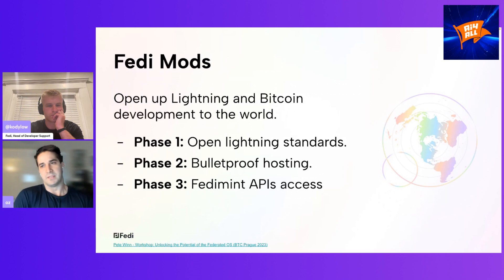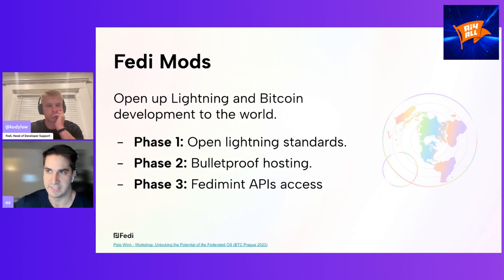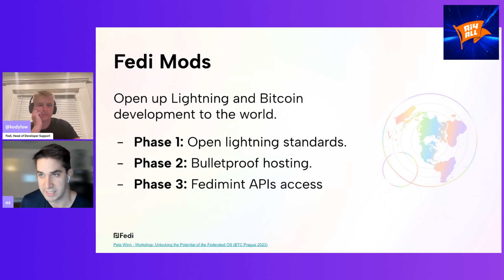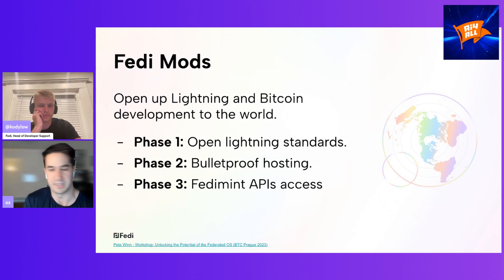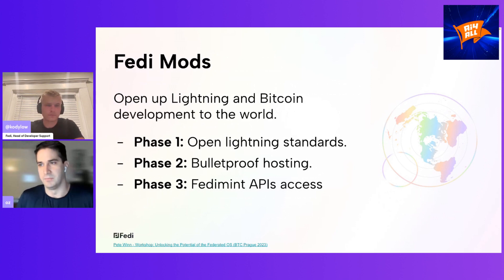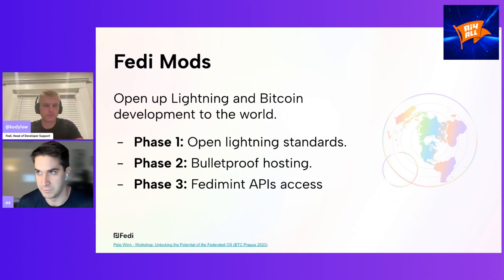Phase one uses existing open Lightning standards to basically integrate with the existing ecosystem. Phase two: you have a WebLN-compatible web app hosted on the internet and federation members using Fedi connected to the federation — you're still loading a website from some external host. The risks there are around who's serving that content; the federation is not serving it per se in phase one. We want to make that more bulletproof, so the federation should be able to give confidence to its members that the hosting is coming from a secure place.